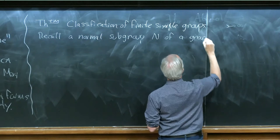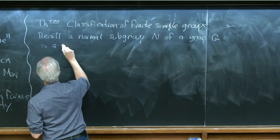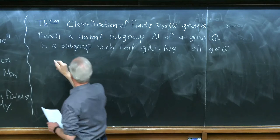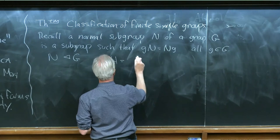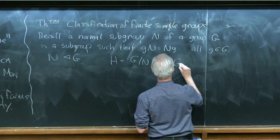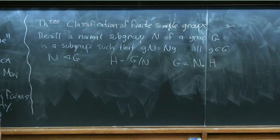is a subgroup such that the left and right cosets are equal, written with a triangle symbol. Given a normal subgroup, you can put a group structure on the cosets to define the quotient G mod N, which allows you to decompose a group G into a smaller group H. Finite group theorists often use a notation: G is N dot H, meaning G has a normal subgroup N and the quotient of G by N is the group H.